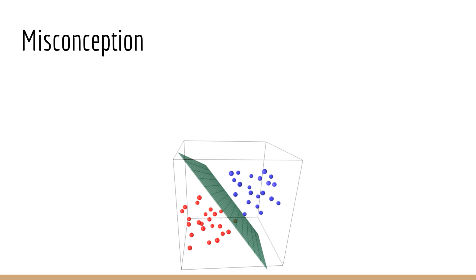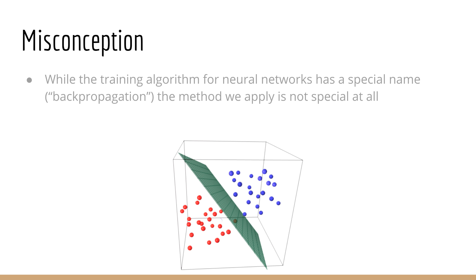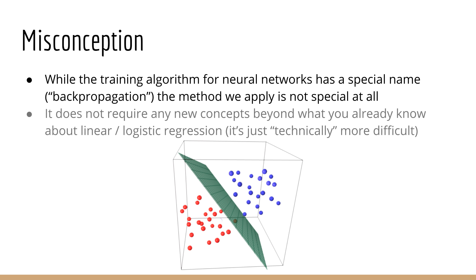At this point, I want to make something very clear, which is a common misconception among students who are new to deep learning. While backpropagation is the name we give to neural network training, it is not a special algorithm. In fact, it's very basic, and it doesn't require any new concepts other than what you already know from linear regression and logistic regression. When you learn about backpropagation, you're not learning about some new special algorithm — we are just doing the exact same thing that we did to train linear regression and logistic regression.